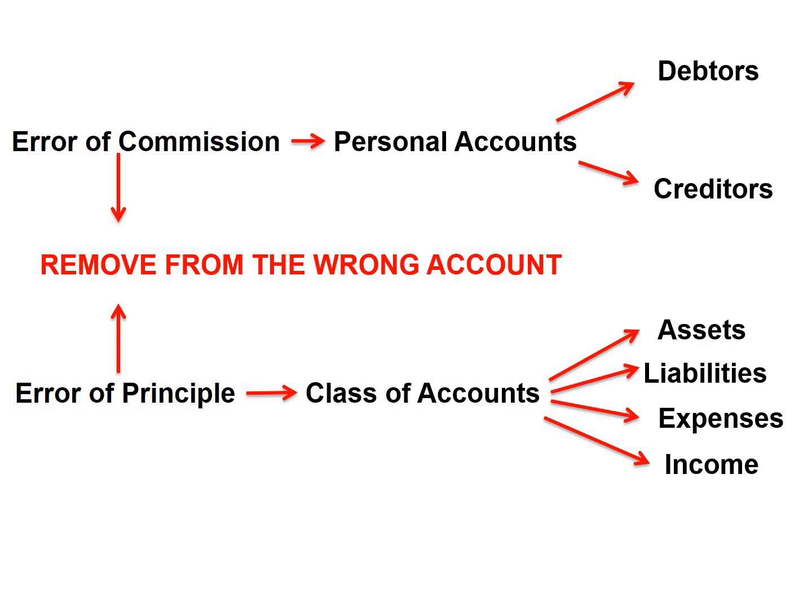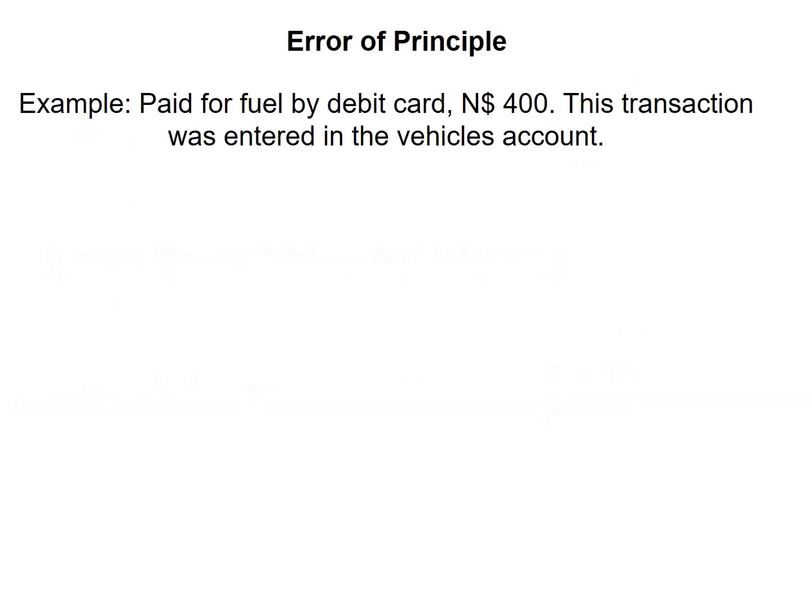Let's have a look at an example. Pay for fuel by debit card, $400. This transaction was entered in the vehicles account. So we can already see that fuel is an expense, while vehicle is an asset.